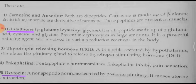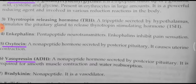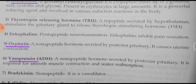Next is thyrotropin releasing hormone and enkephalins. Then oxytocin, which is a nonapeptide made up of nine amino acids. It is a hormone secreted by the posterior pituitary. It causes uterine contraction, helps in the parturition process during childbirth, and also promotes milk secretion.